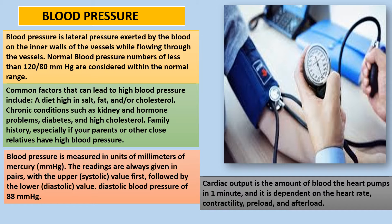A diastolic blood pressure of 88 mmHg is noted here. Cardiac output is the amount of blood the heart pumps in one minute, and it is dependent on the heart rate, contractility, preload, and afterload. You can see in the diagram how blood pressure is measured by a doctor.